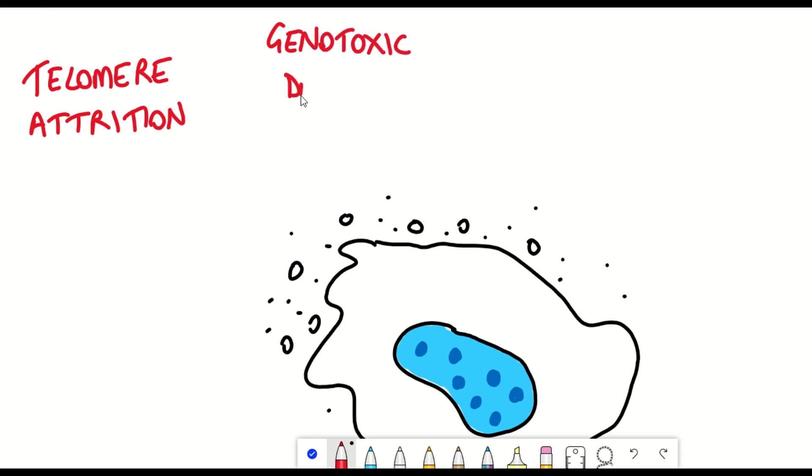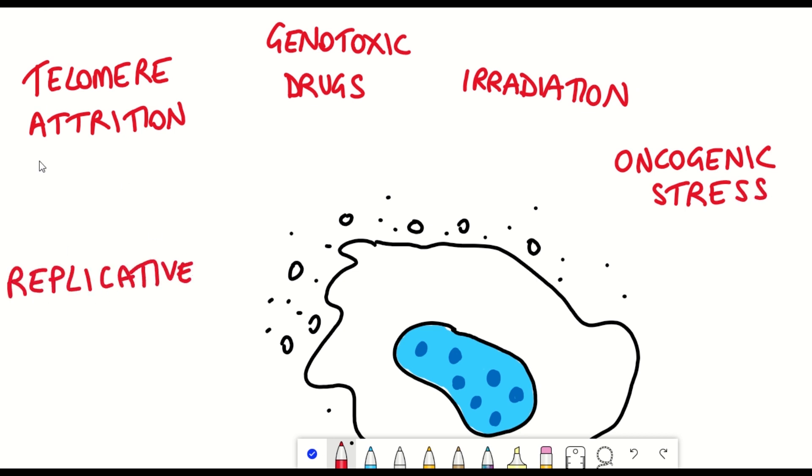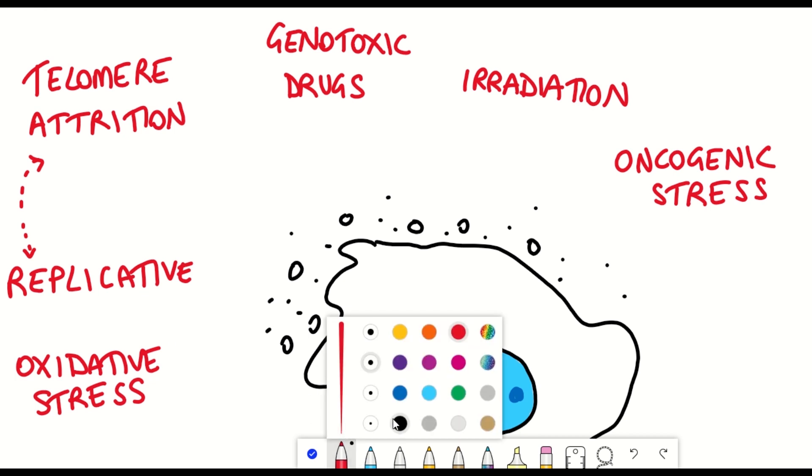This includes telomere attrition, genotoxic drugs that are used to treat cancer, irradiation, oncogenic stress, after replicating so many times, and also oxidative stress.